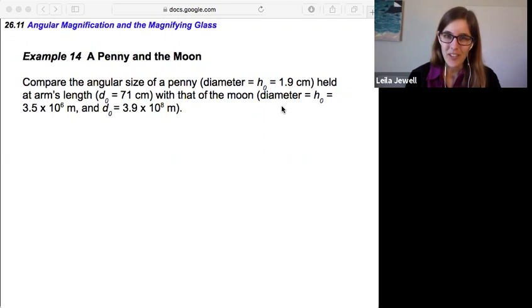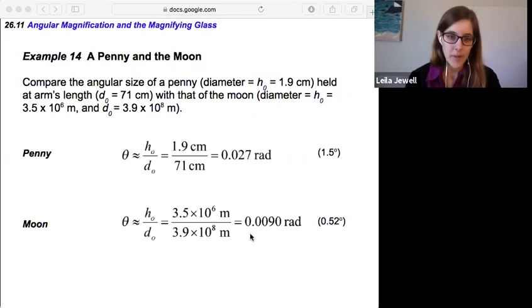Okay, so for angular size, we're going to use that same equation of the height over the distance. If we do that for each of them, for the penny and the moon, we can divide it out and we get our answer in radians. Notice that's what will always come when we're using this equation—it'll come out in radians, which we could convert to degrees, and then much nicer numbers to work with. We find that the penny is about one and a half degrees versus the moon is 0.52 degrees.